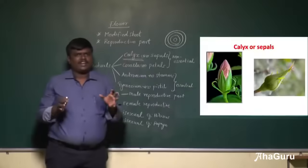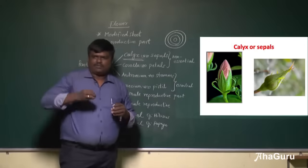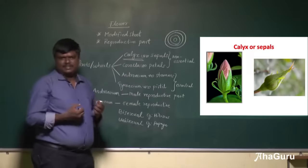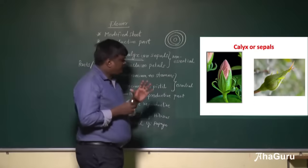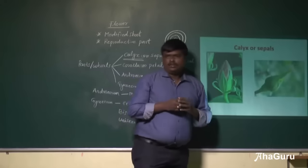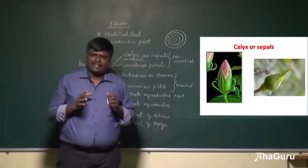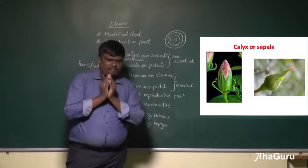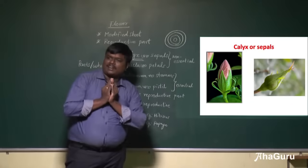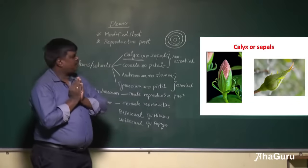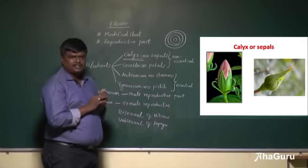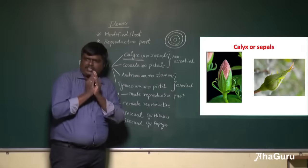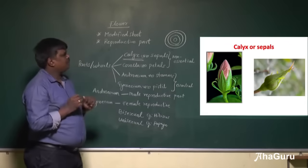Anything that is green in color contains chlorophyll. If chlorophyll is present, they can carry out the process of photosynthesis. Even the calyx can do the photosynthesis process to a certain extent. Another function of calyx is that during the bud condition, the rest of the parts — corolla, androecium, and gynoecium — are well protected by the calyx. So the two functions of calyx are: photosynthesis, and protection of inner whorls during the bud stage.